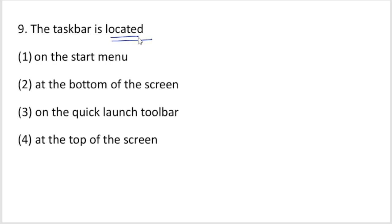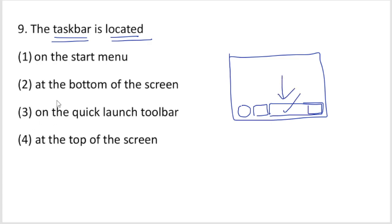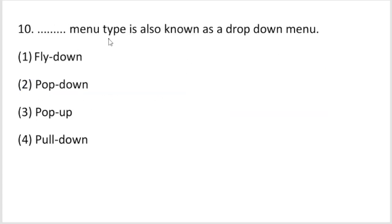The taskbar is located at the bottom of the computer screen. It contains the Start button, and on the right side there is the notification area. The taskbar is at the bottom of the screen — that is your right answer.